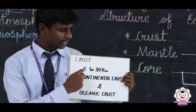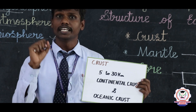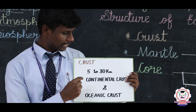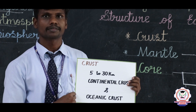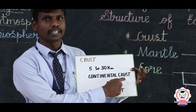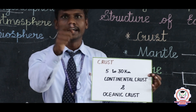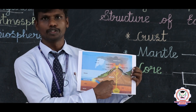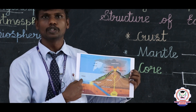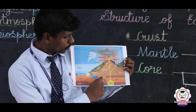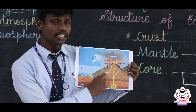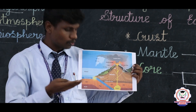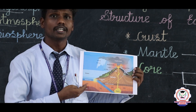The crust is a thin layer of the earth, also called the skin of the earth. How much does it extend? It extends almost 5 to 30 kilometers. It has a continental crust and an oceanic crust. Here I can show you the pictures. This is the landmass — lithosphere. Here is a water body — hydrosphere. Here I can show you the continental crust, which means it is present on the land, and the oceanic crust is present at the bottom of the ocean.